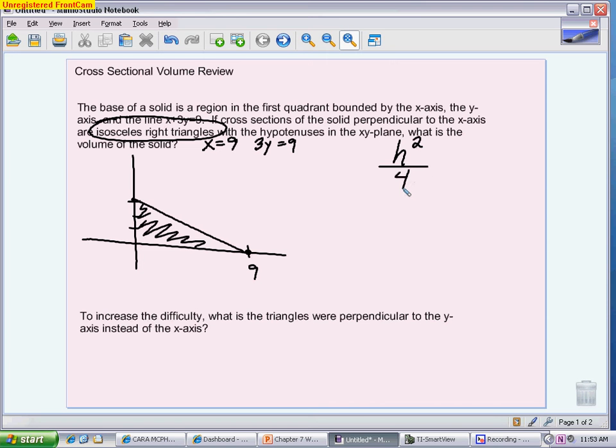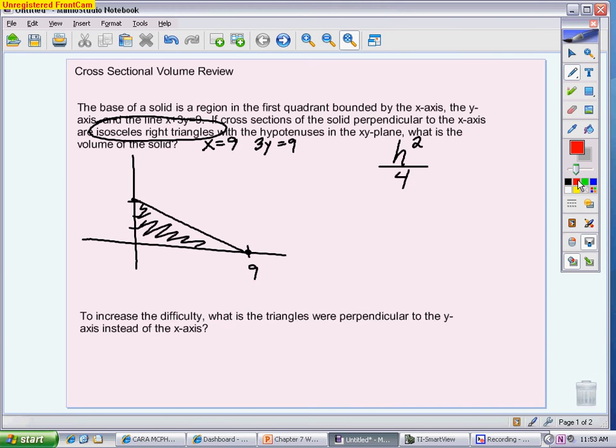First, we have to figure out how we're going to represent the height. If you look at this problem, we are drawing our isosceles-right triangles perpendicular to the x-axis. So here is the side of one of our isosceles-right triangles. Very easy to represent that height. That height is nothing more than just the function.